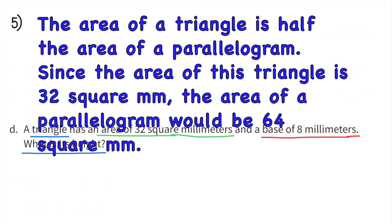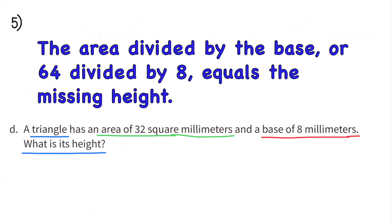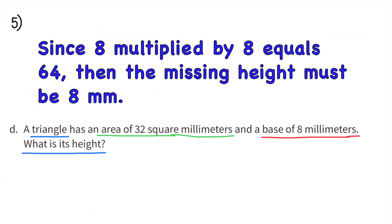Since the area of this triangle is 32 square millimeters, the area of a parallelogram would be 64 square millimeters. The area divided by the base, or 64 divided by 8, equals the missing height. Since 8 multiplied by 8 equals 64, then the missing height must be 8 millimeters.